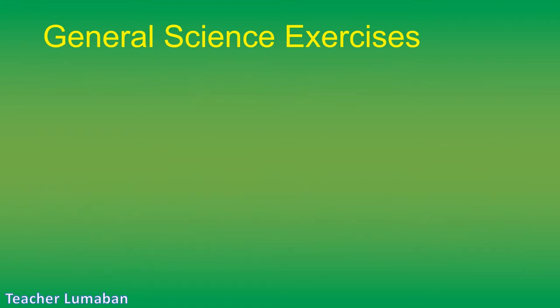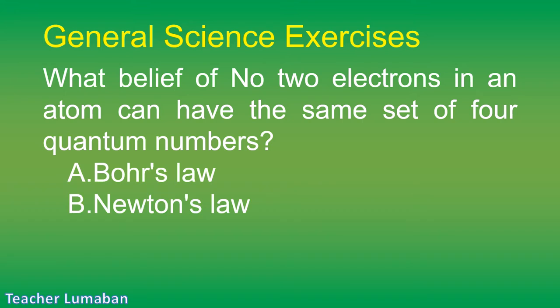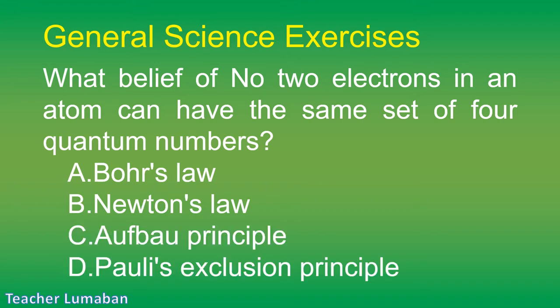What belief states that no two electrons in an atom can have the same set of four quantum numbers? Letter A: Bauer's law. Letter B: Newton's law. Letter C: Aufbau principle. Letter D: Pauli's exclusion principle.